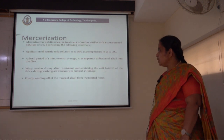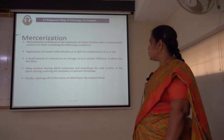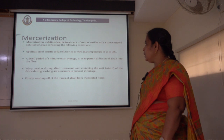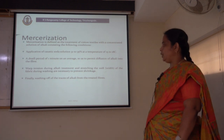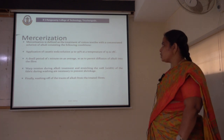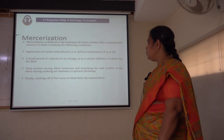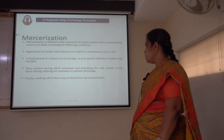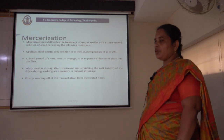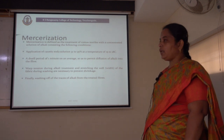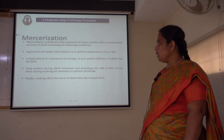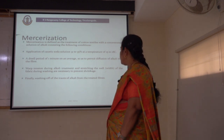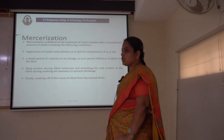Coming to mercerization, mercerization is defined as the treatment of cotton textiles with a concentrated solution of alkali consisting of the following conditions. First is the application of caustic soda solution at 31 to 35 percent concentration at a temperature of around 15 to 18 degrees Celsius. This is the concentration of caustic to be used and the temperature of the mercerization process. Next, a dwell period of 1 minute on average serves to permit diffusion of alkali into the fiber.